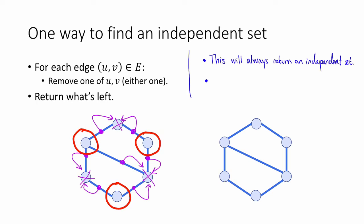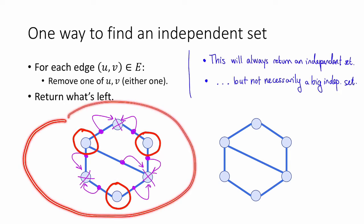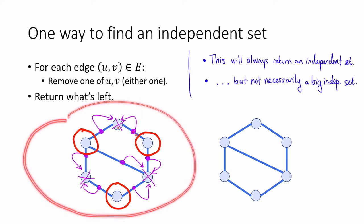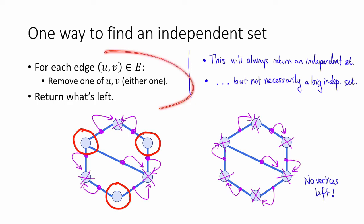However, the second observation is that it's not always necessarily going to return a big independent set. In the example, I sort of cleverly chose which vertices to remove so that I ended up with a decent-sized independent set. I could have done it differently — for example, edges could keep killing the same vertices, so that at the end of the day there are no vertices left. In that case, this procedure would return an independent set, but it would also return the empty set, which is not very interesting.